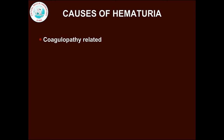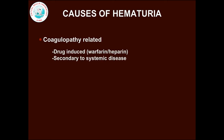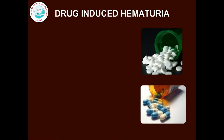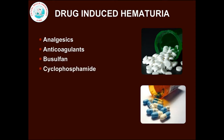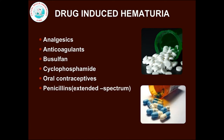Coagulopathy-related hematuria can be drug-induced or secondary to systemic disease. Factitious hematuria in females may be due to menstruation. Some of the drugs implicated as causes of hematuria are analgesics, anticoagulants, busulfan, cyclophosphamide, oral contraceptives, penicillins, quinine, and vincristine.